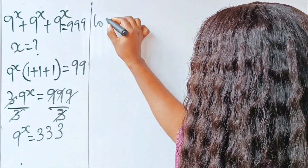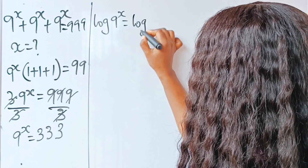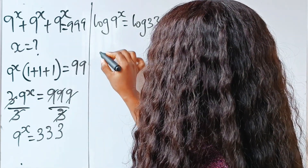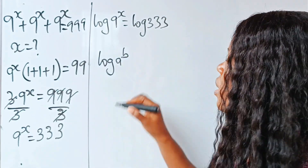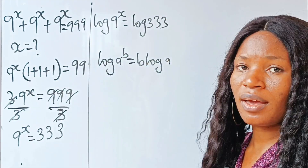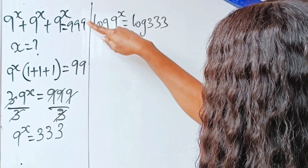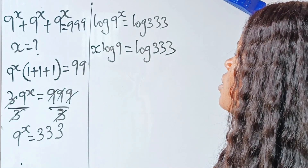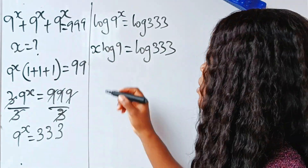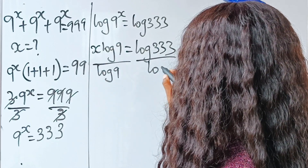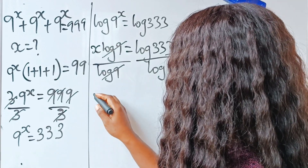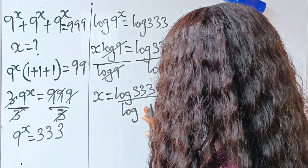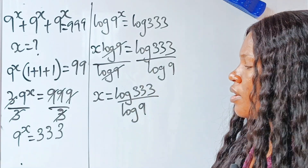So we are going to have log(9^x) = log(333). According to the power rule of logarithms, when you have log(a^b), this is the same as b multiplied by log(a). So we can bring the exponent down: x multiplied by log 9 is equal to log 333. To get the value of x, we divide through by log 9, giving us x = log 333 / log 9.